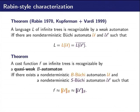Instead, we had to consider the quasi-weak B automata, and that is a class that admits Rabin-style characterization.